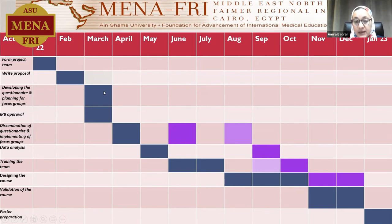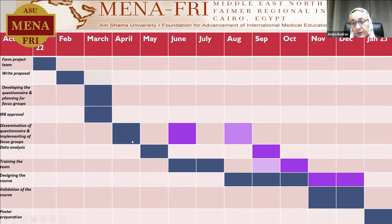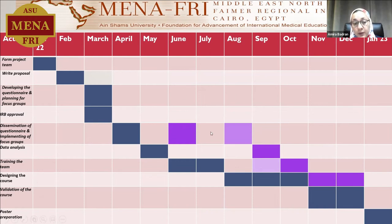The proposal was submitted to the ESCAL committee at the faculty and ethical approval was retrieved by April. It was planned that dissemination of the questionnaires and implementation of the focus groups would take place in April. However, this did not work exactly as planned. We had to postpone this step until June due to students being engaged in their coursework and assessments. The questionnaires for staff members were also postponed to August due to the course load for staff members who weren't able to participate before then.